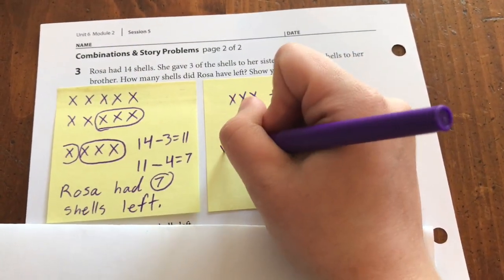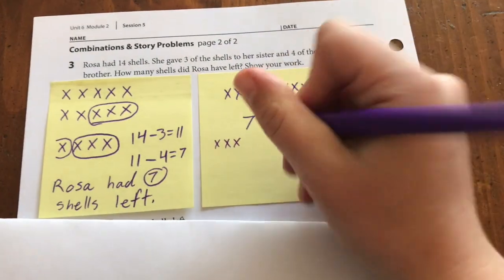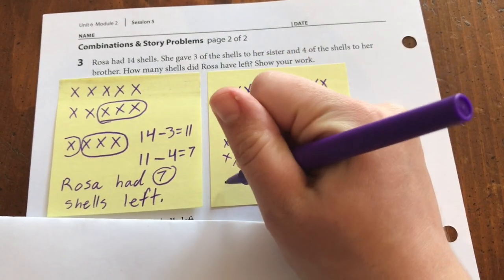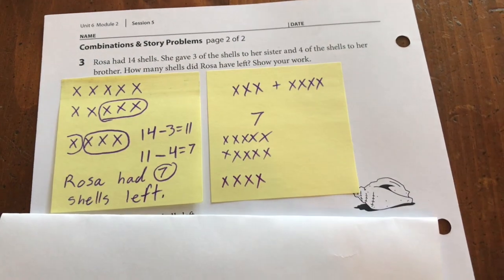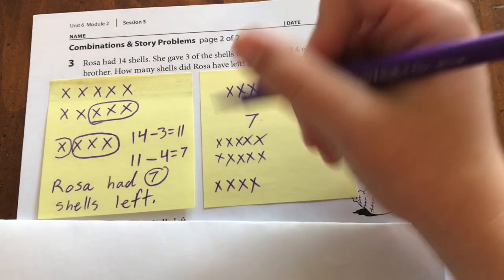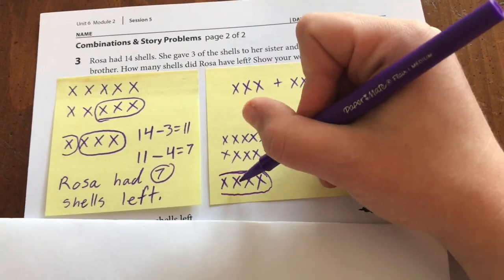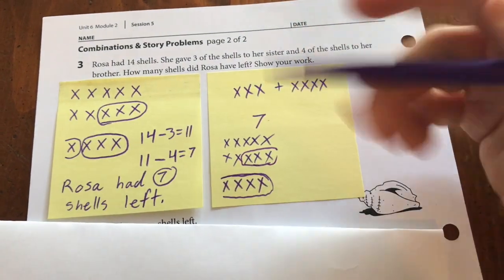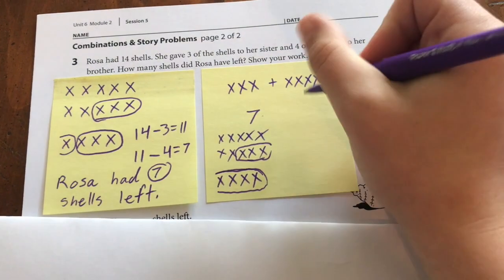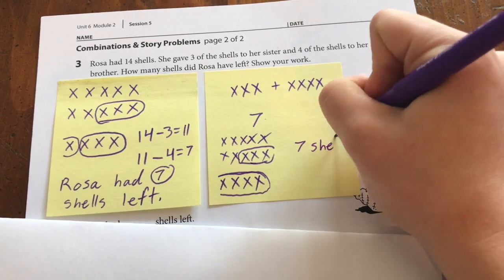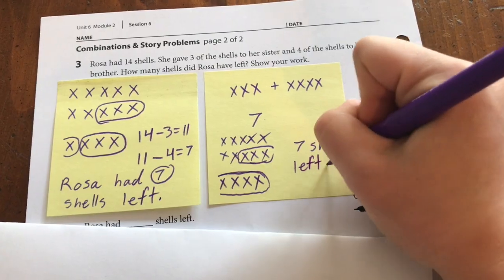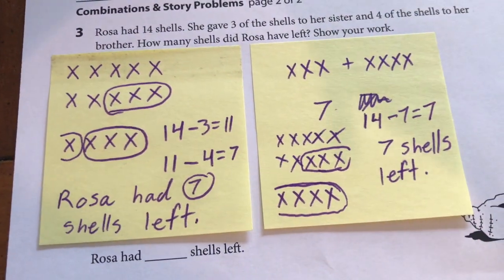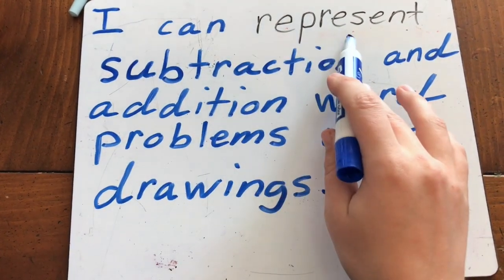And then if we have our 14 — let's count: 1, 2, 3, 4, 5, 6, 7, 8, 9, 10, 11, 12, 13, 14 — now I know I need to take away 7. So I'm going to circle 1, 2, 3, 4, 5, 6, 7. And that leaves us with 1, 2, 3, 4, 5, 6, 7. She has 7 shells left. So 14 minus 7 equals 7.